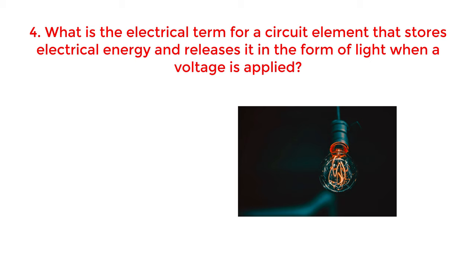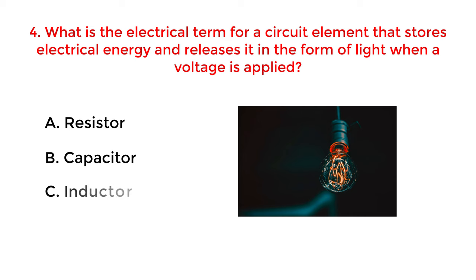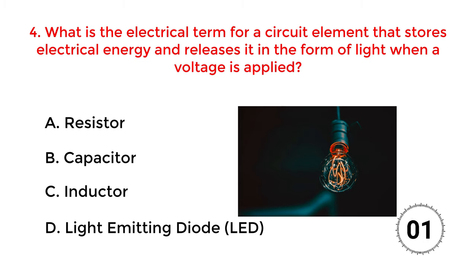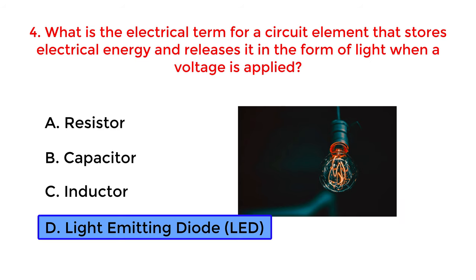What is the electrical term for a circuit element that stores electrical energy and releases it in the form of light when a voltage is applied? A. Resistor. B. Capacitor. C. Inductor. D. Light Emitting Diode (LED). The correct answer is option D: Light Emitting Diode (LED).